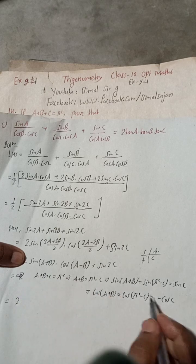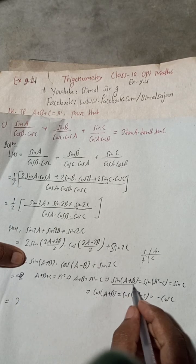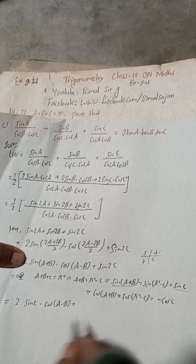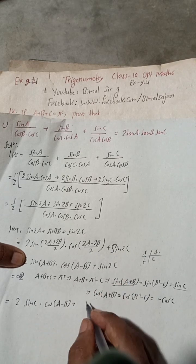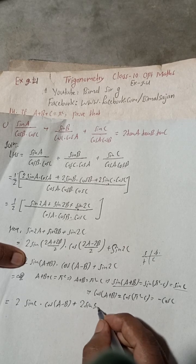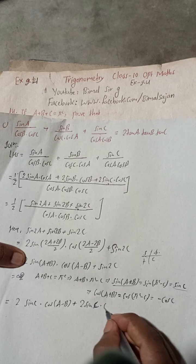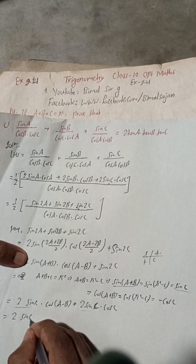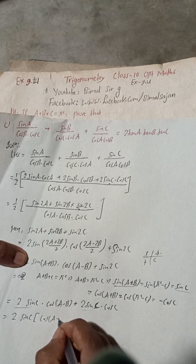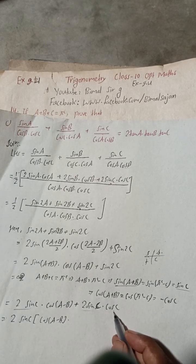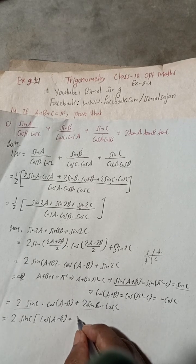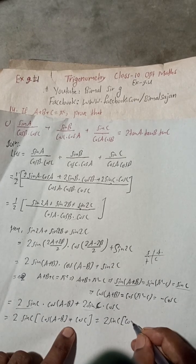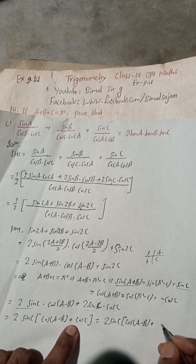Coming back: we have 2 sin(A+B) cos(A−B) plus sin 2C. Since sin(A+B) equals sin C, we write sin C. And sin 2C expands as 2 sin C cos C. Taking 2 sin C as common, the remaining terms are cos(A−B) plus cos C.